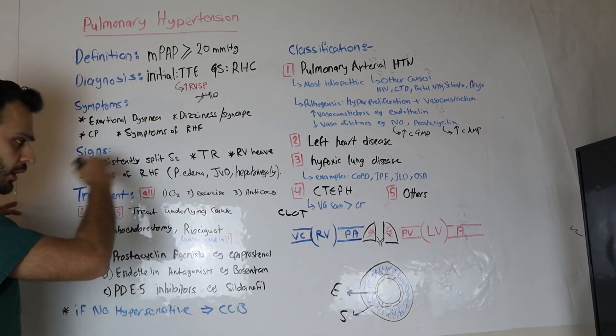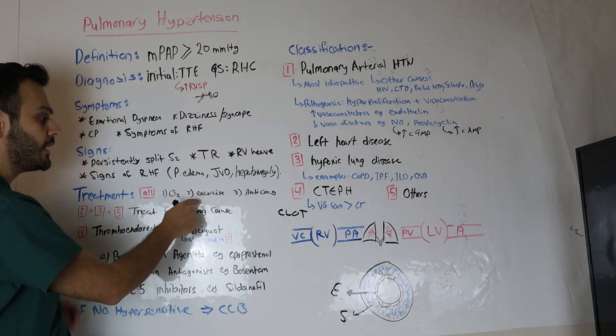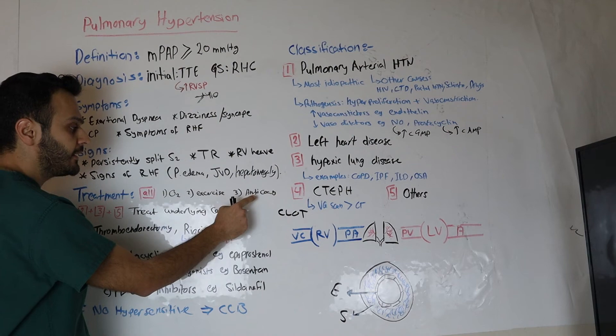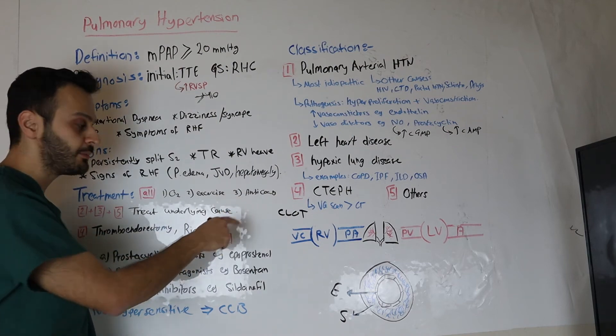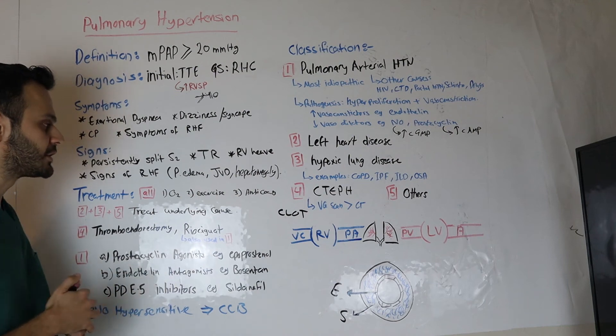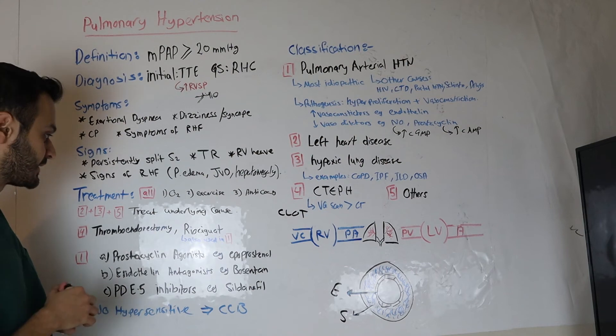And also, for all the classes, if the patient is hypoxic, you want to give them oxygen. You want to also involve them in an exercise program. And you want to do anticoagulation, but that is basically on a case-by-case situation, and you want to weigh the benefit over risk for every patient's case.